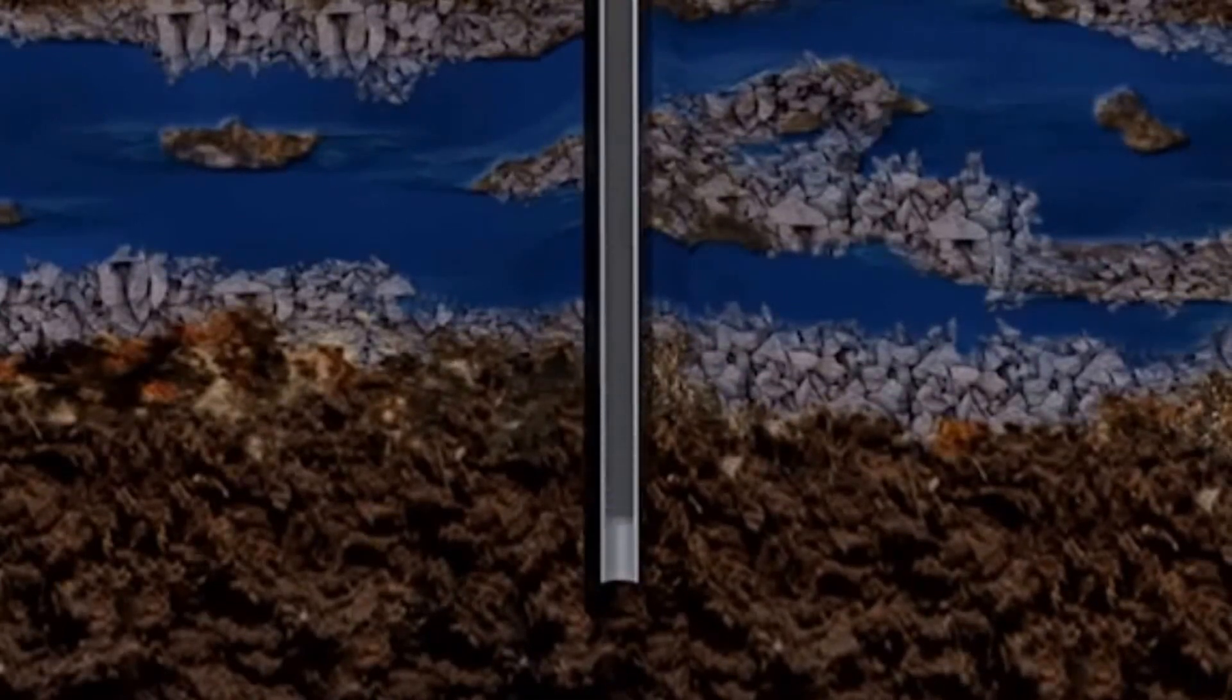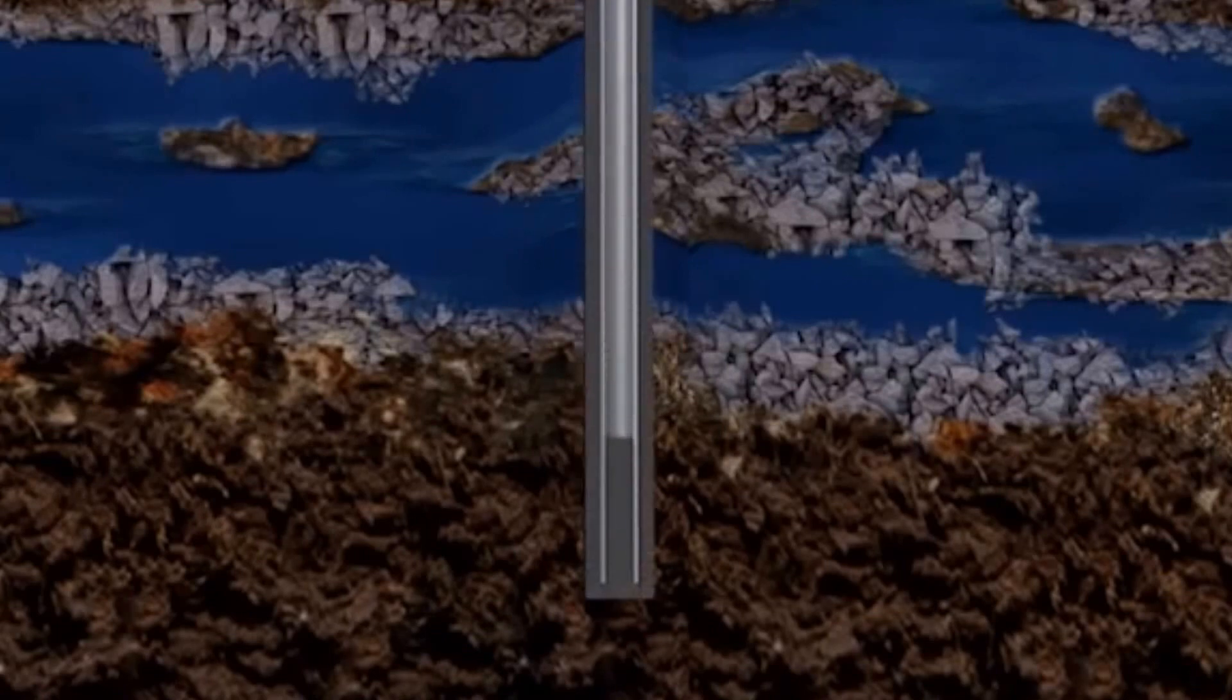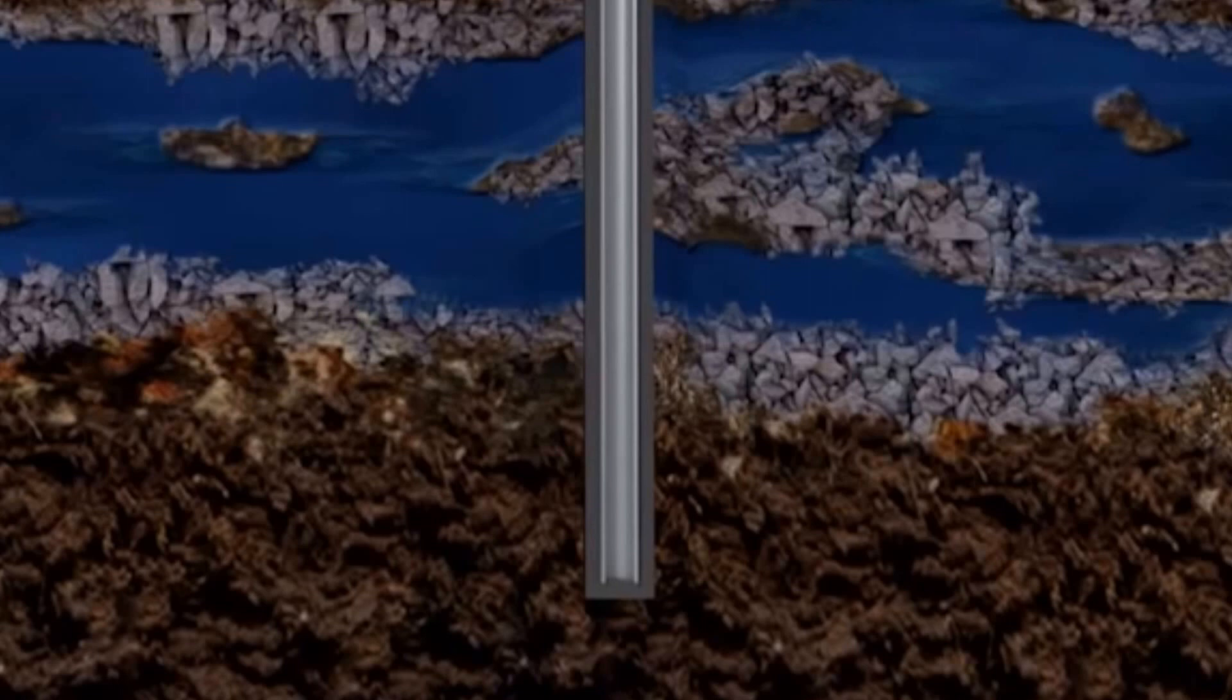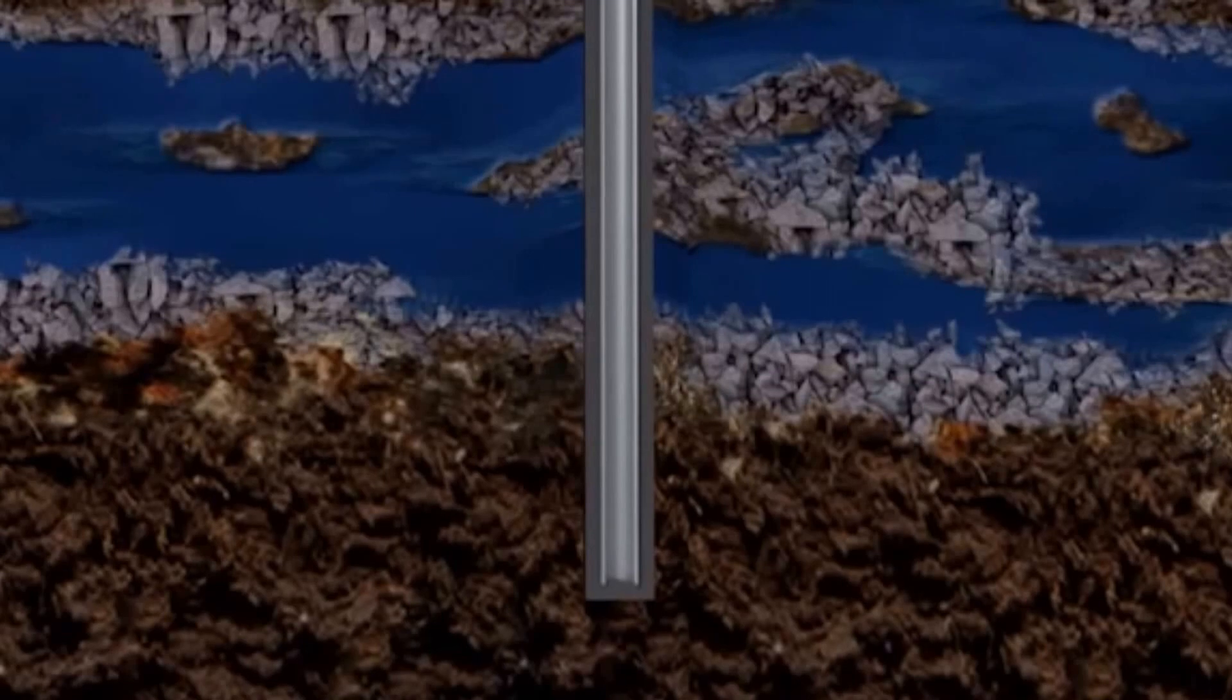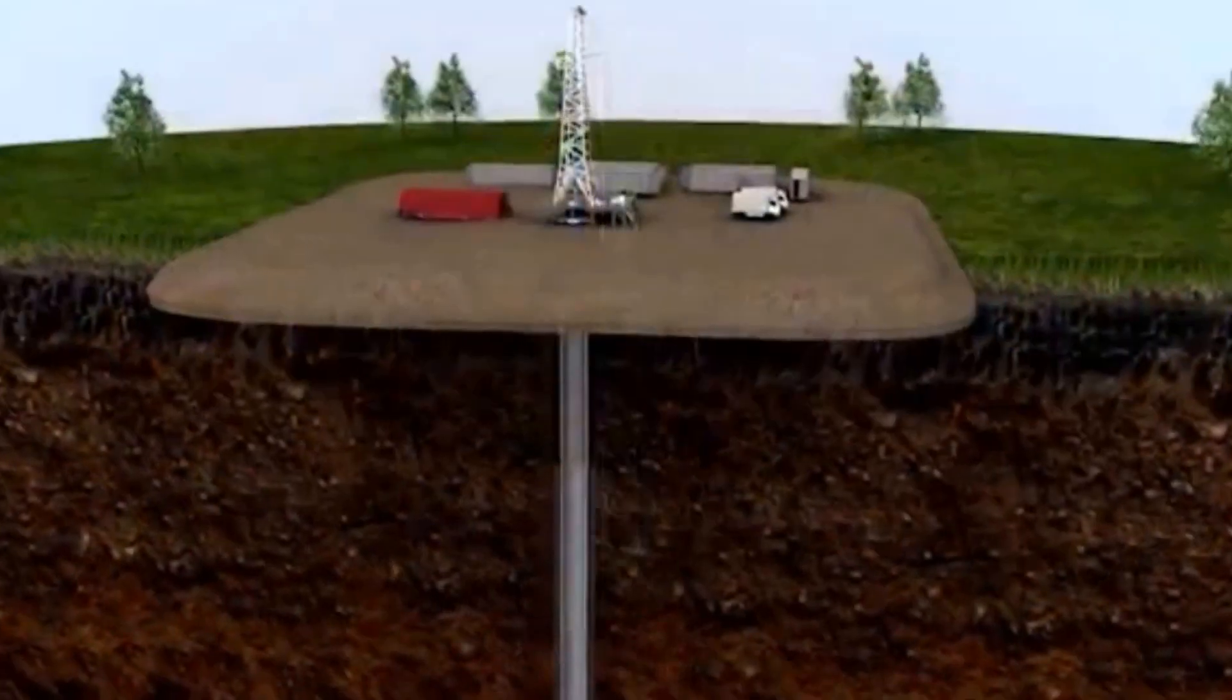Next, cement is pumped down the casing. When it reaches the bottom, it is pumped down and then back up between the casing and the borehole wall, creating an impermeable additional protective barrier between the wellbore and any freshwater sources.